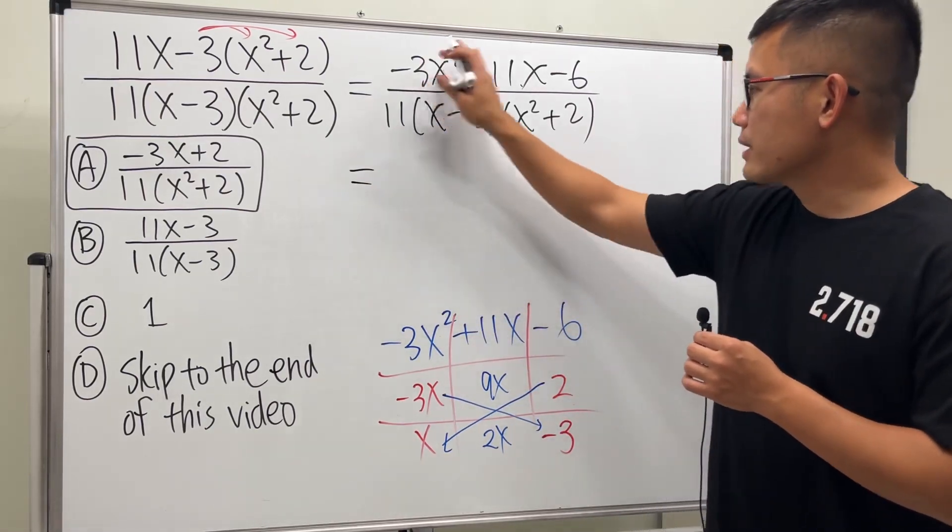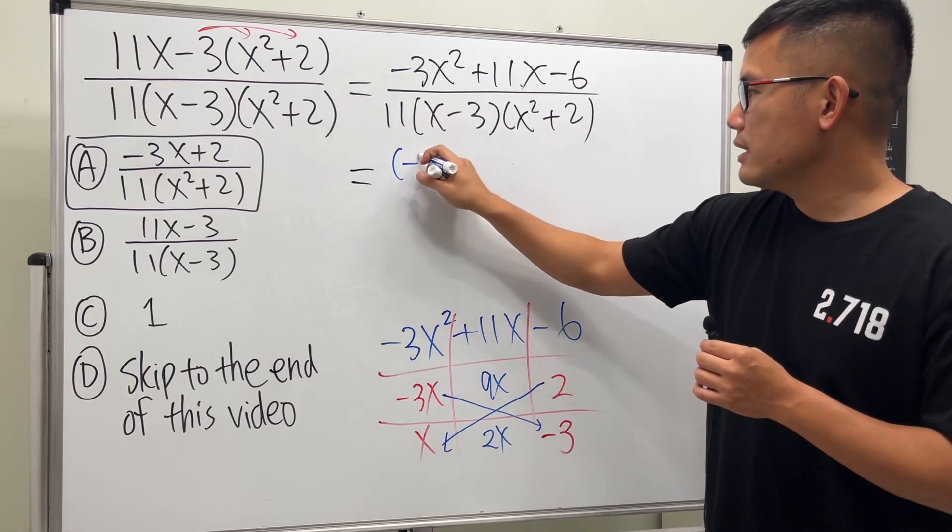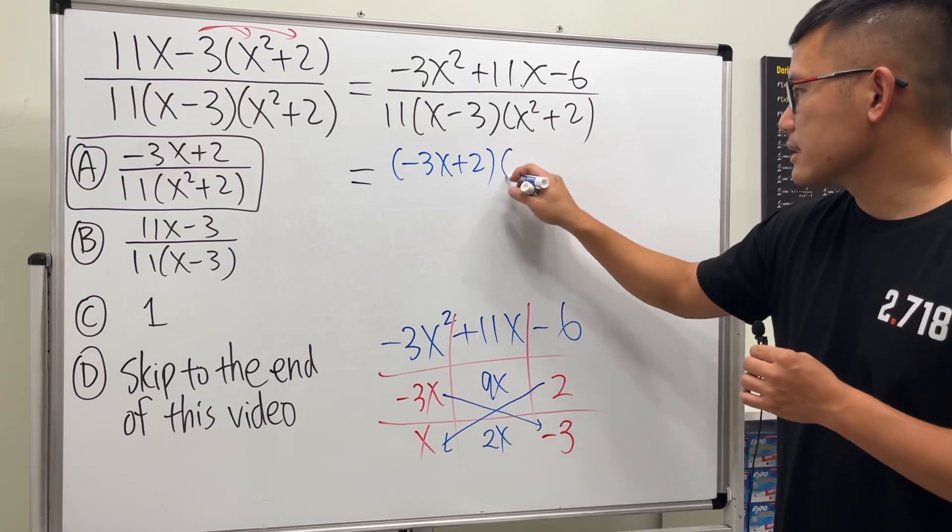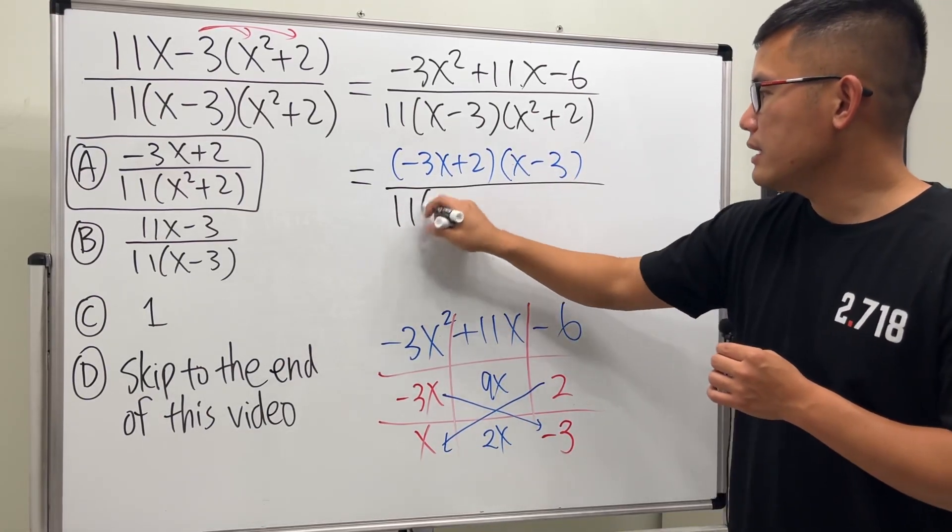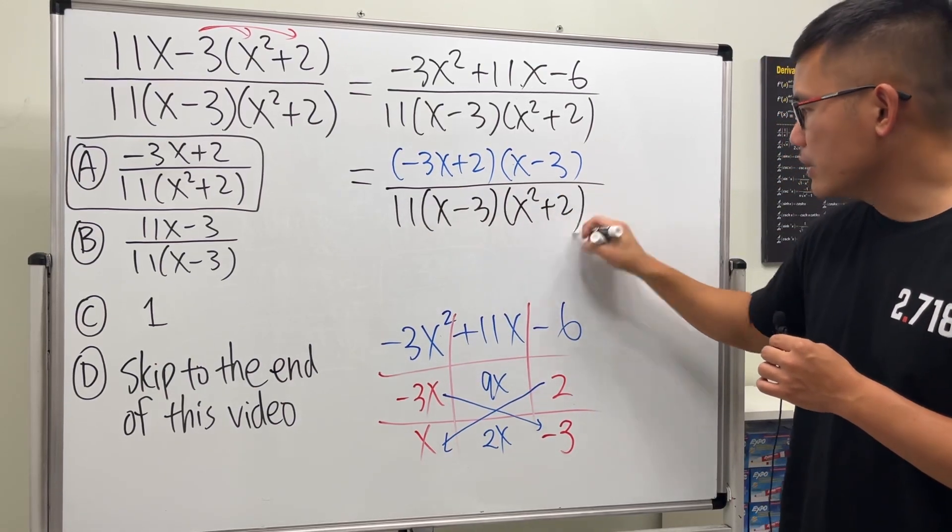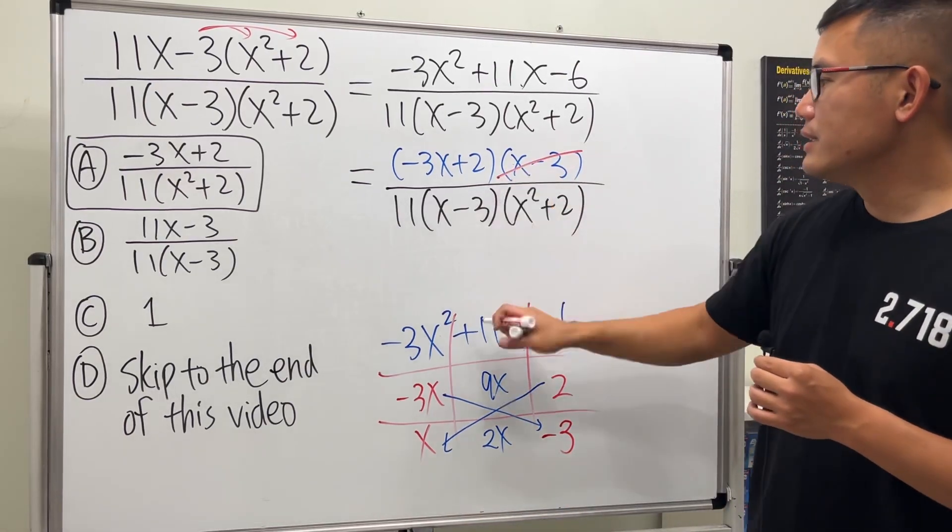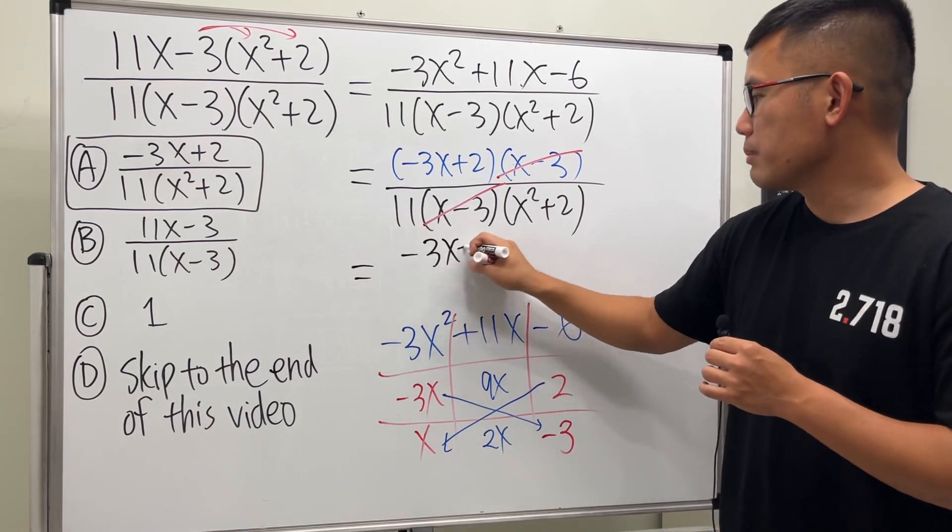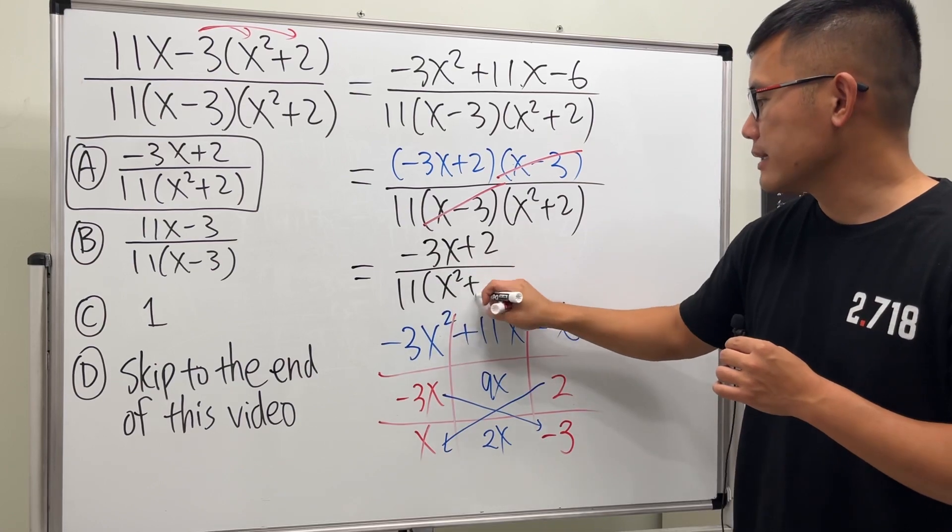All right, so the top right here factors to be this and that, so that's -3x + 2, and then this and that is x - 3. And the bottom stays the same, 11 times (x - 3) times (x² + 2). And we know this and that cancel, so finally the answer is indeed -3x + 2 over 11(x² + 2).